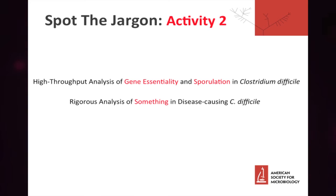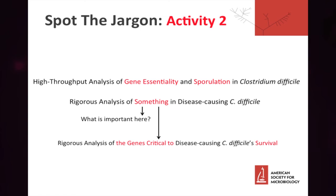We're still struggling with essential genes and spore formation. The thing to keep in mind is what is the important piece of information that we need to impart to our audience. Essential genes and sporulation are both critical to the survival of Clostridium difficile and to disease transmission. Here's the final translation of our title: 'Rigorous Analysis of the Genes Critical to Disease-Causing C. difficile's Survival.'